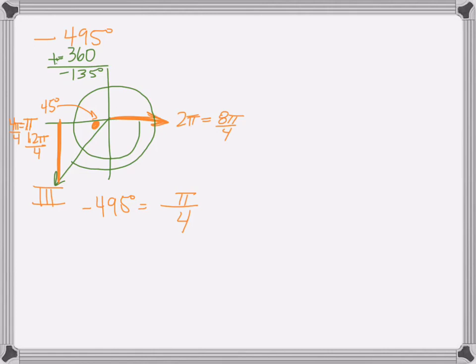After 2 rotations, but I didn't go that far, so I stopped short, so that's why it's 11 pi over 4.